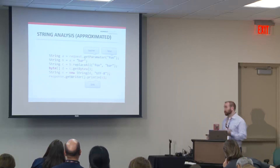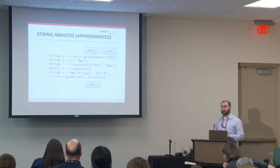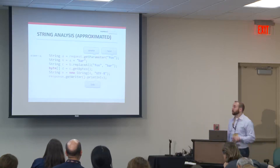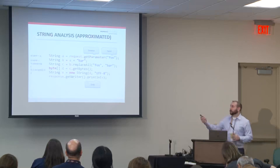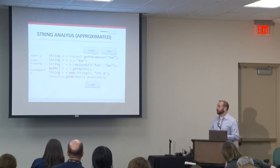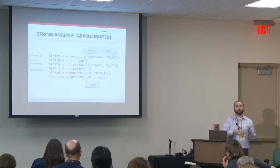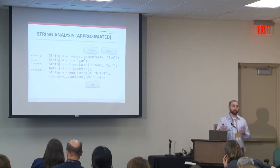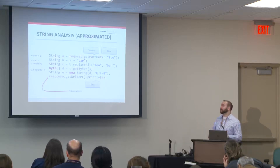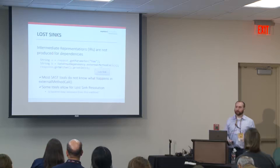Then there's string analysis. Some tools have this, some don't — it's much more complicated and resource intensive, so tools that do have it usually have it disabled by default. Basically it's able to trace exactly what part of the string is tainted. B's substring — a specific part of B — is now tainted. As you go through the other calls, it should be able to tell what part of the string is tainted. Most tools are not very good at string analysis though — it's pretty advanced.